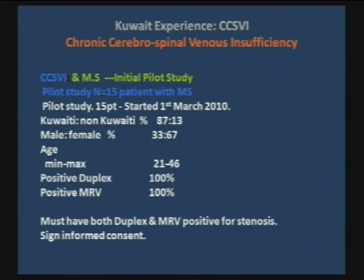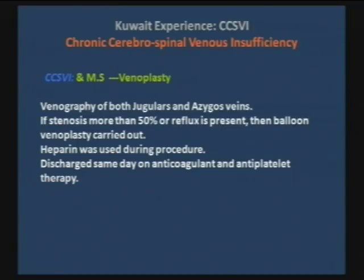We decided that before doing any patient, they had to have a positive duplex and a positive MRV, and sign an informed consent. We did a venography of both jugular, internal jugular, and azygos veins. When we found stenosis of more than 50% or persistent reflux, we went ahead and did balloon venoplasty.